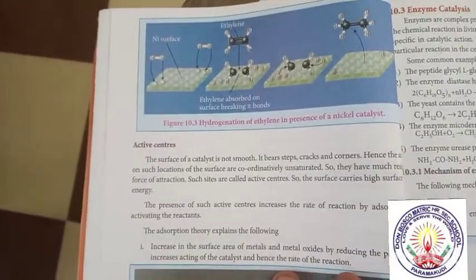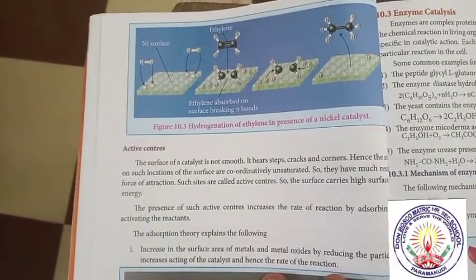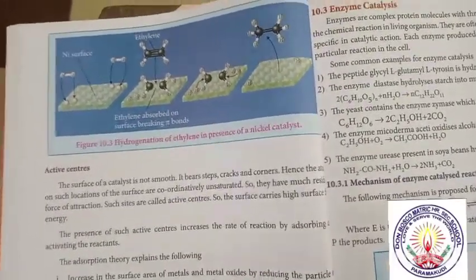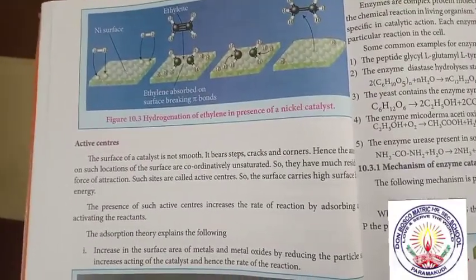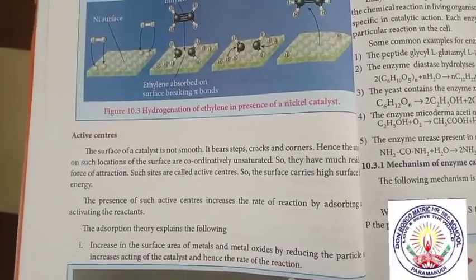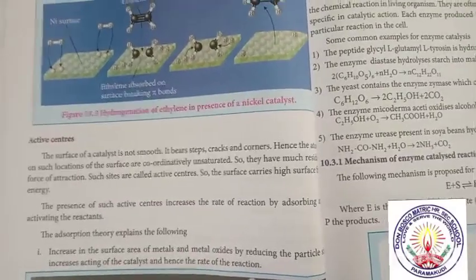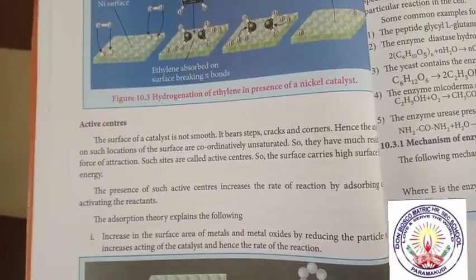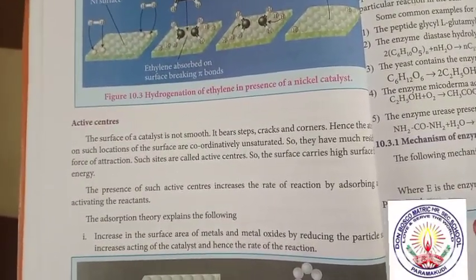The surface of a catalyst is not smooth. It bears steps, cracks and corners. Hence the atoms at such locations of the surface are coordinatively unsaturated, so they have much residual force of attraction. Such sites are called active centers.